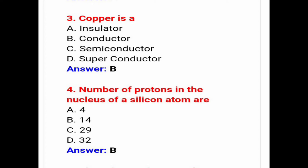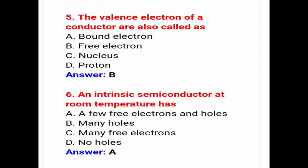The number of protons in the nucleus of a silicon atom are? Answer is B — 14. Next, the valence electrons of a conductor are also called free electrons.